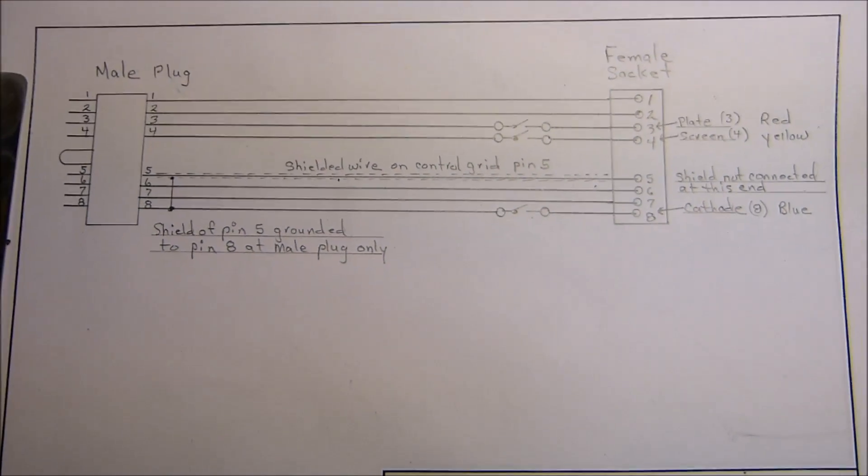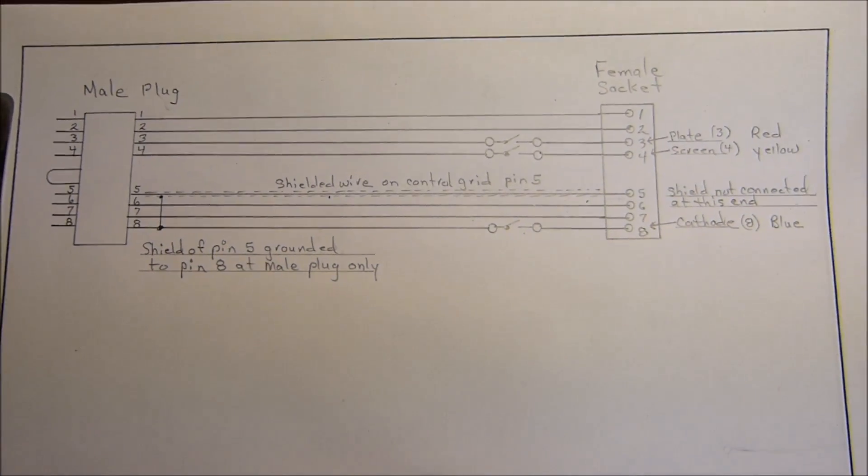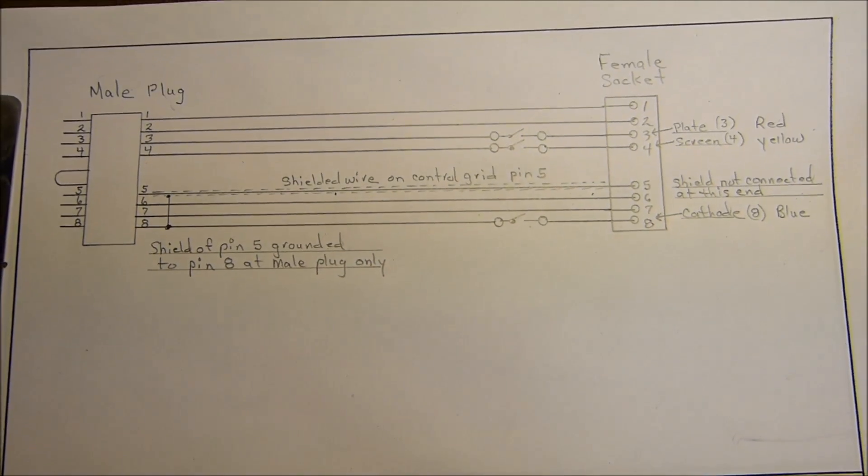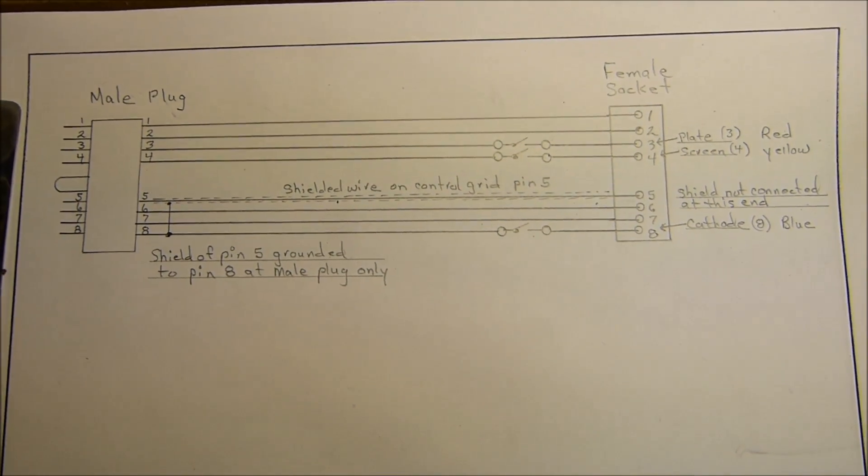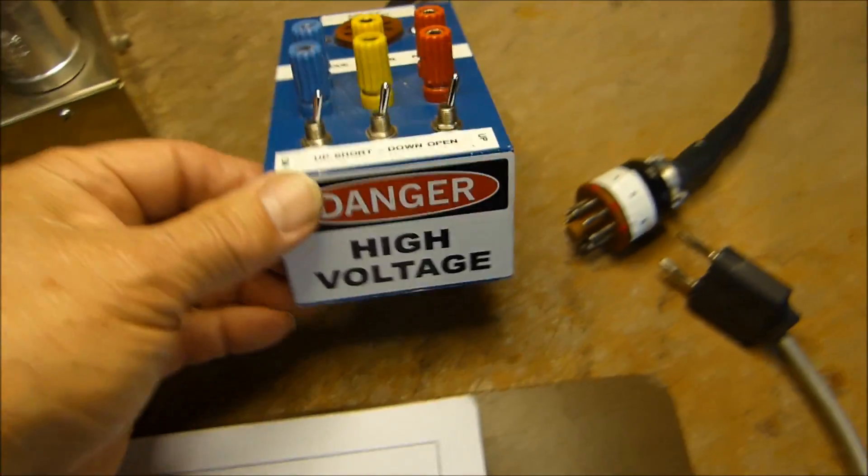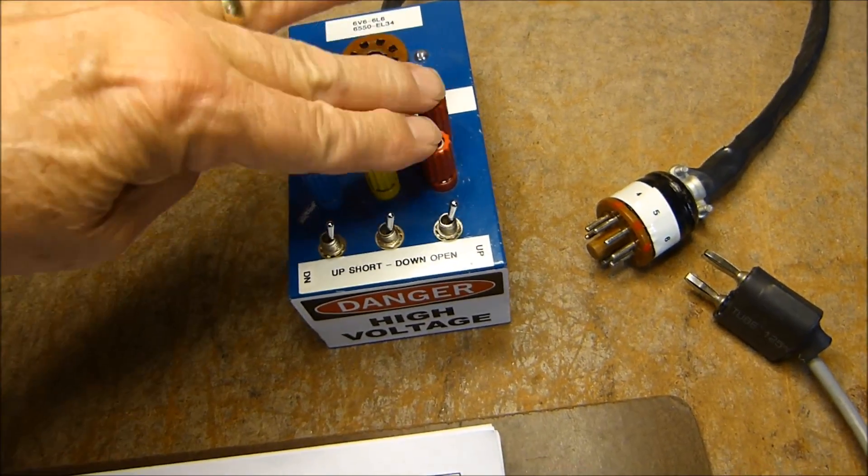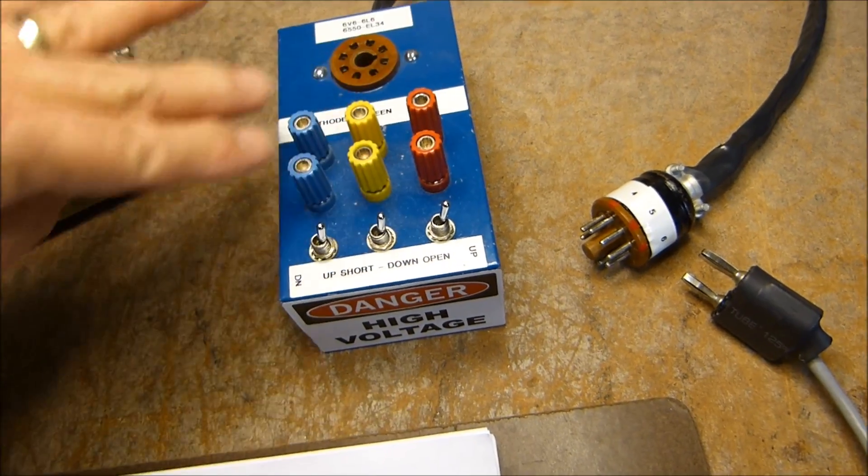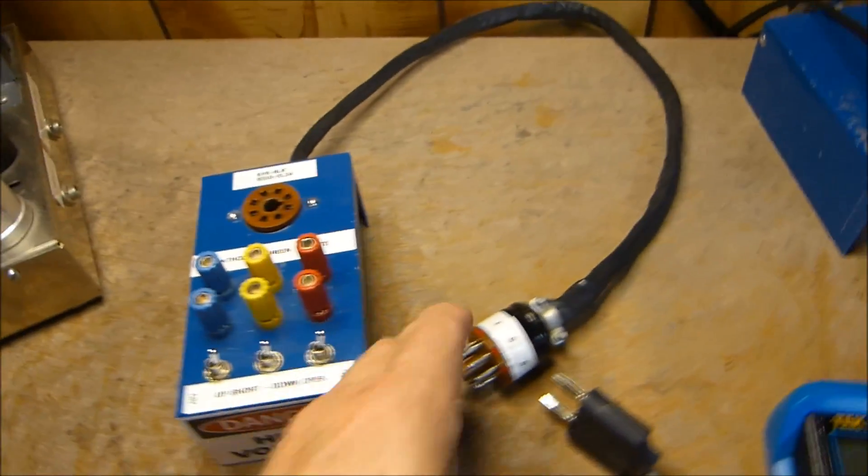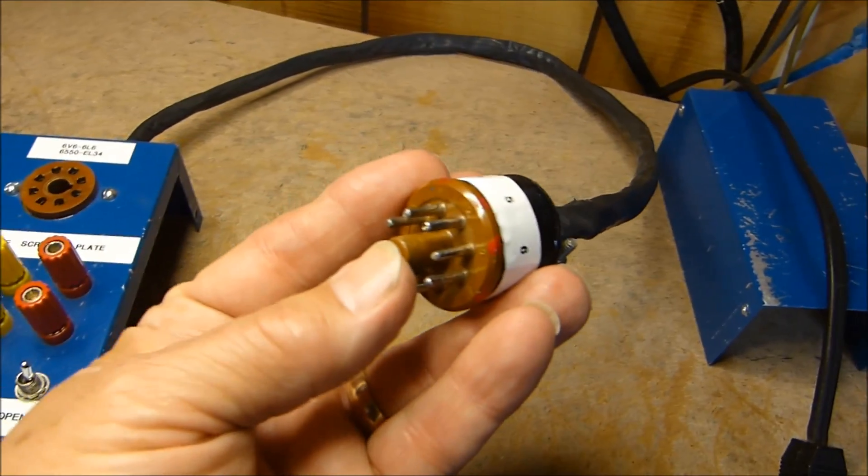I'll hold it steady so you can pause and look at it if you desire. I've got my high voltage signs on it because there is high voltage on pins 3 and 4, which are the plate and screen. The cathode has no high voltage, but this male plug plugs in place of the tube.